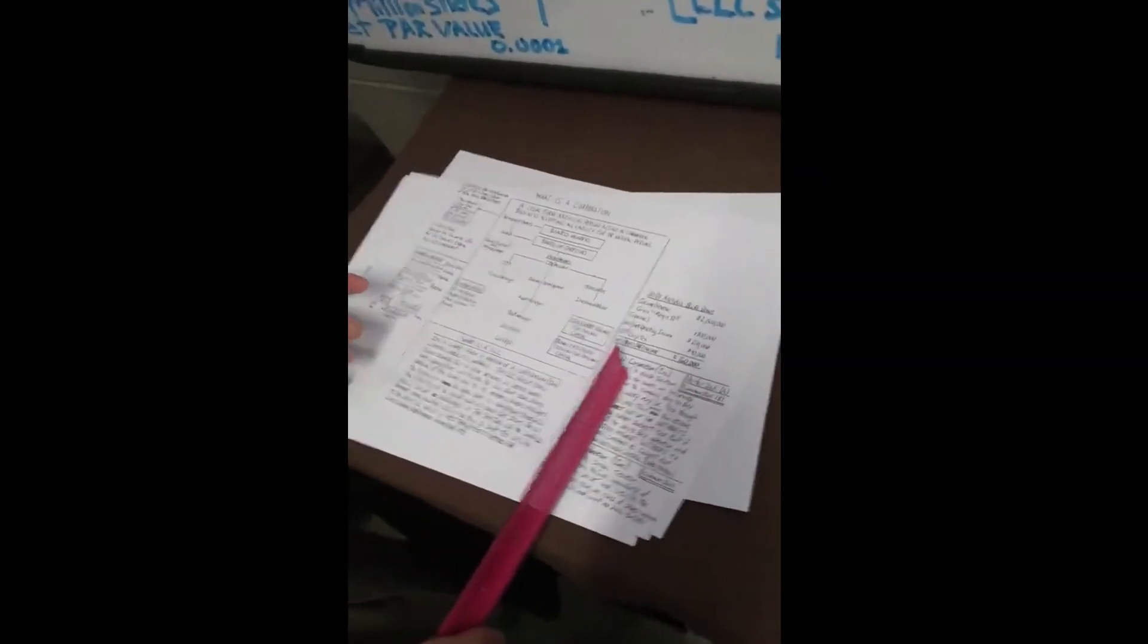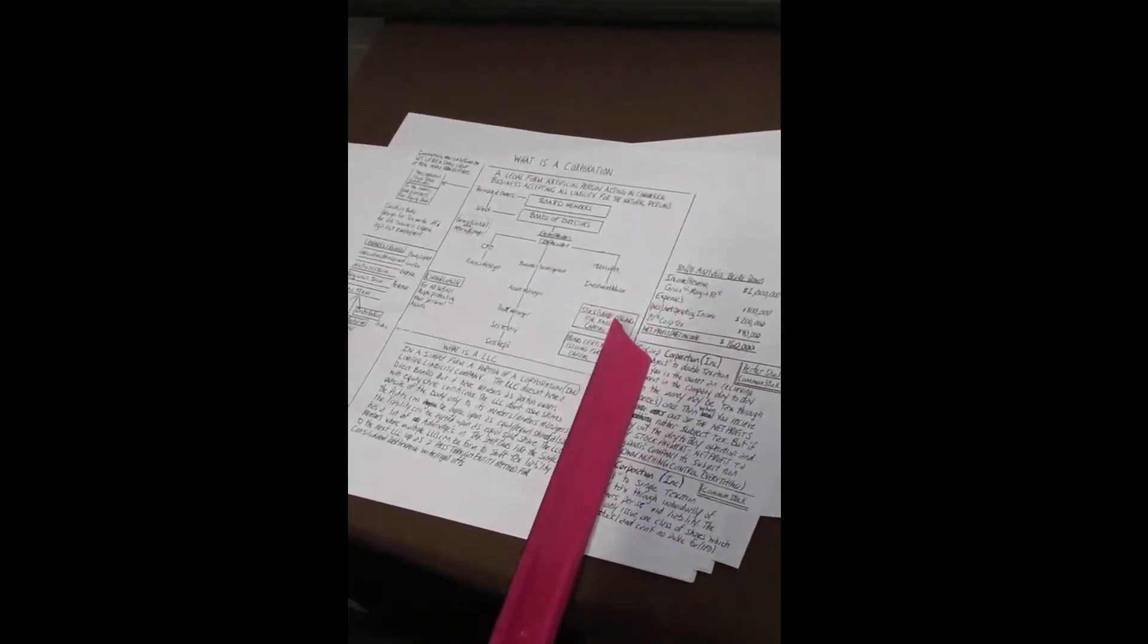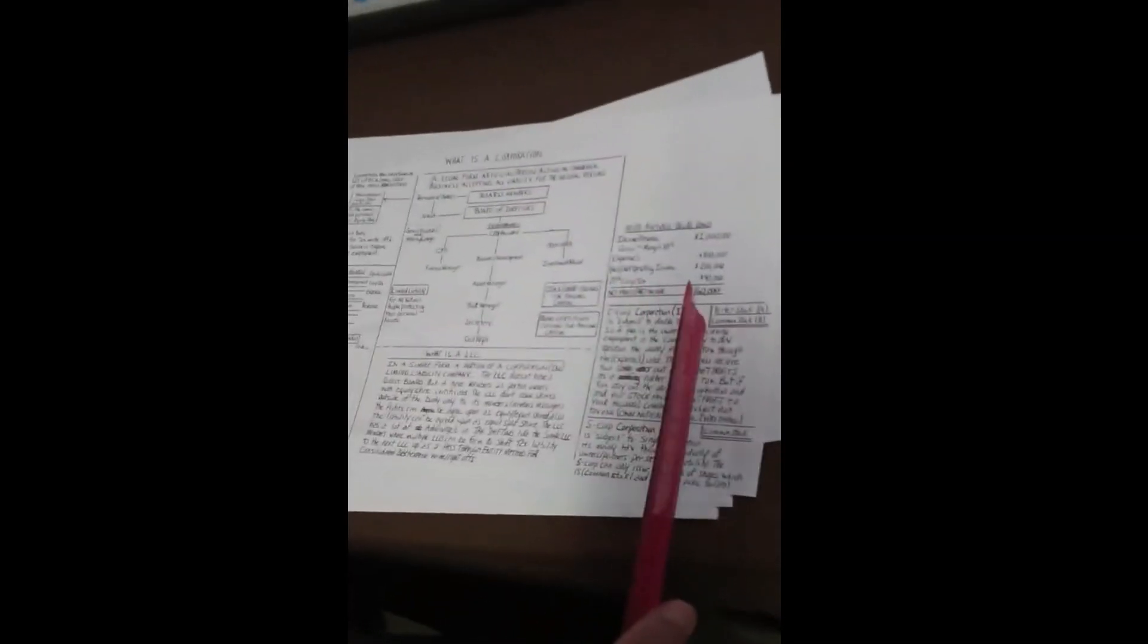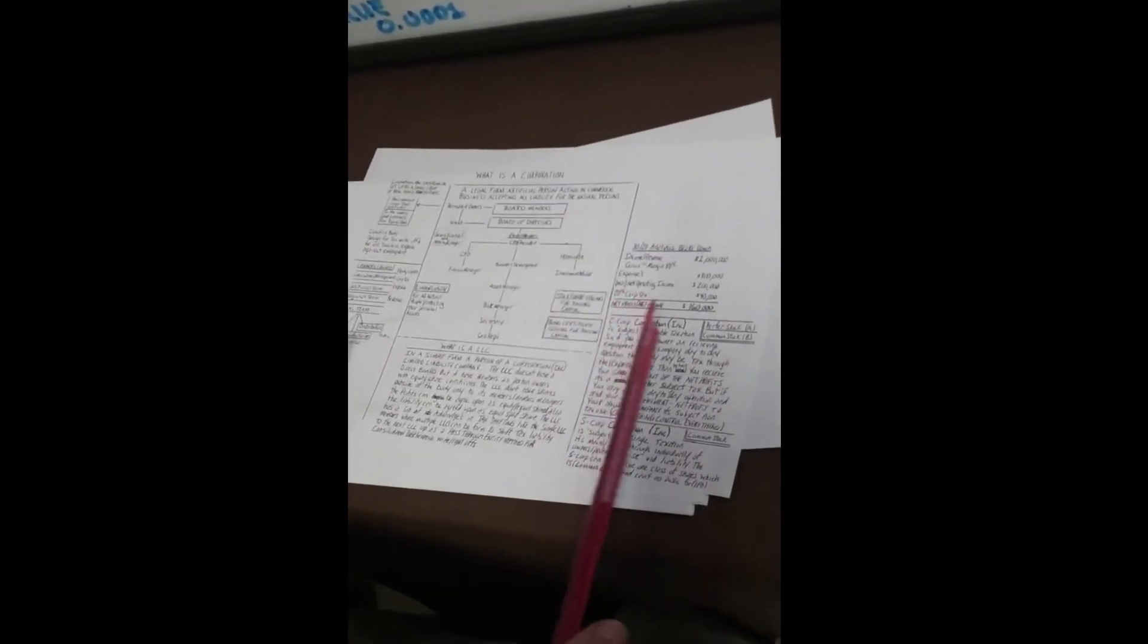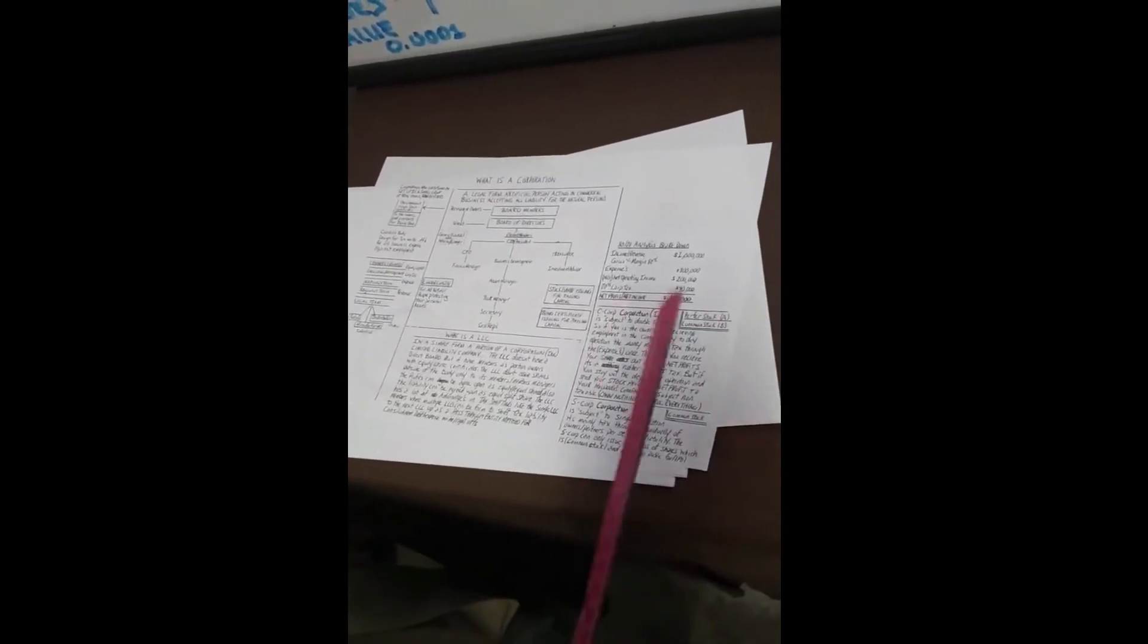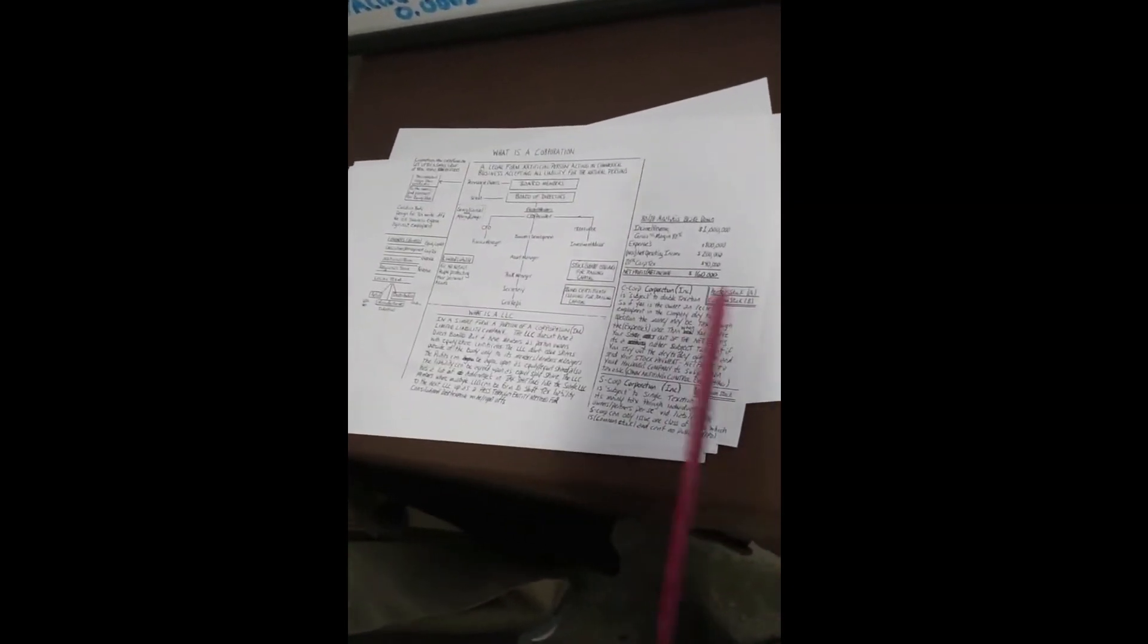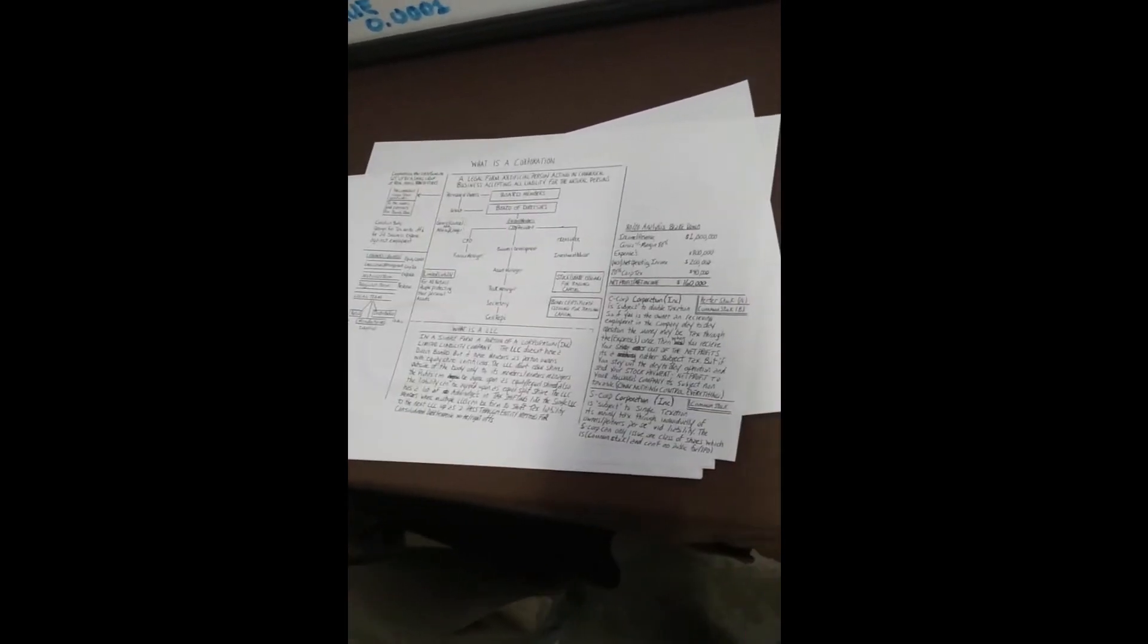The C called Corporation Inc., preferred stock Inc., and common stock Inc. Preferred stock ranked to offer common stock. The C called Corporation Inc. is subject to double taxing. So if you as the owner and receive an employment in the company day-to-day operation, the money may be taxed through the expense once. Then when you receive your share out of the net profit, it's another subject tax. But if you stay out of the day-to-day operation and see your stock paid in that private to your holding company, it's subject non-taxable. Own that control everything.